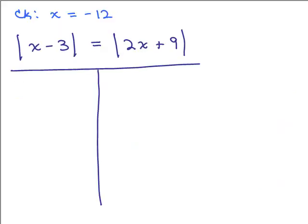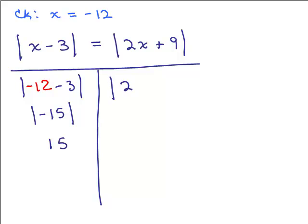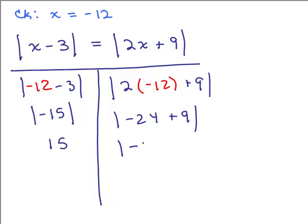Let's check x equals negative 12. We plug in negative 12 for x and simplify inside the absolute value sign. We have the absolute value of negative 15, which is 15 on the left side. On the right side, plugging in negative 12 gives us negative 24 plus 9, which is the absolute value of negative 15, also 15. So negative 12 is a solution.